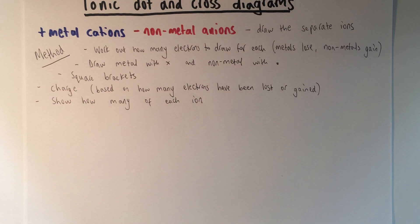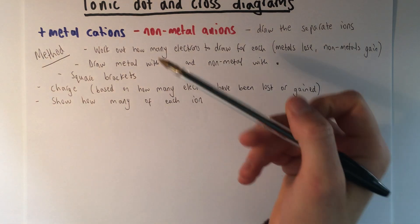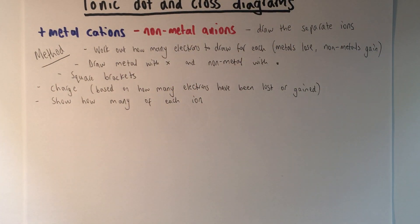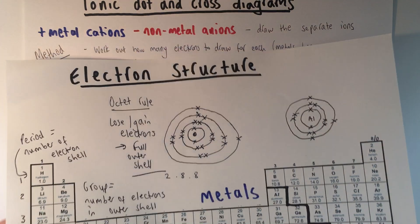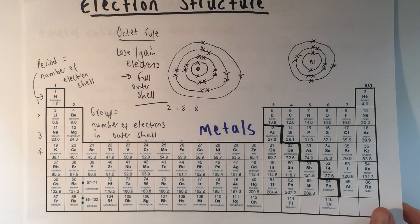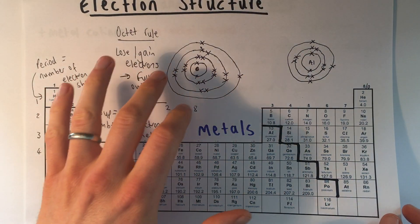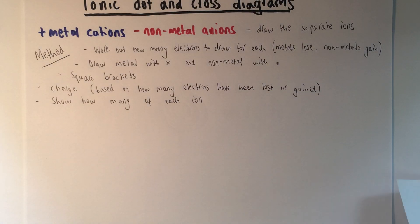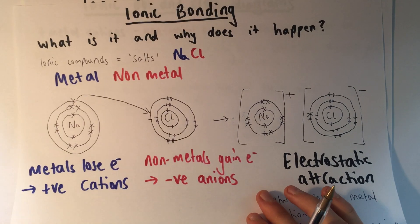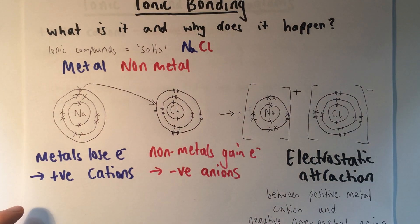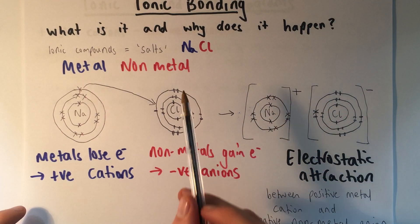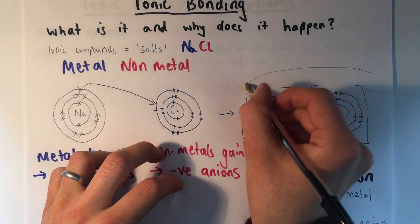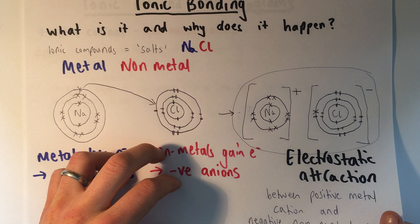This video is going to take you through some worked examples of how to draw ionic dot and cross diagrams. Before you watch this, I'd recommend you watch the video about electron structure — you've got to understand how electrons fit atoms to understand bonding — and then the video about how ionic bonding happens and why it happens. In that video, I did the first example of a dot and cross diagram for an ionic compound, which was sodium chloride.